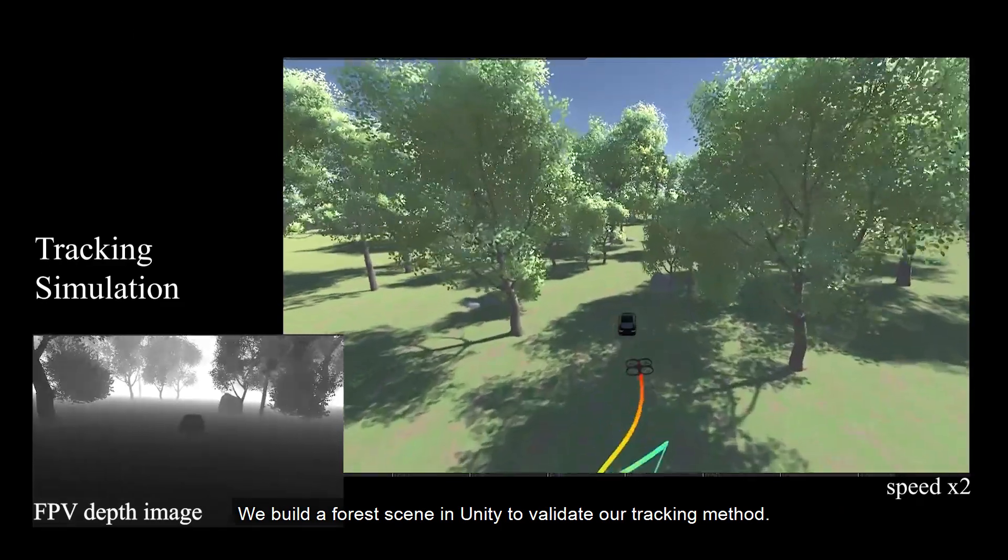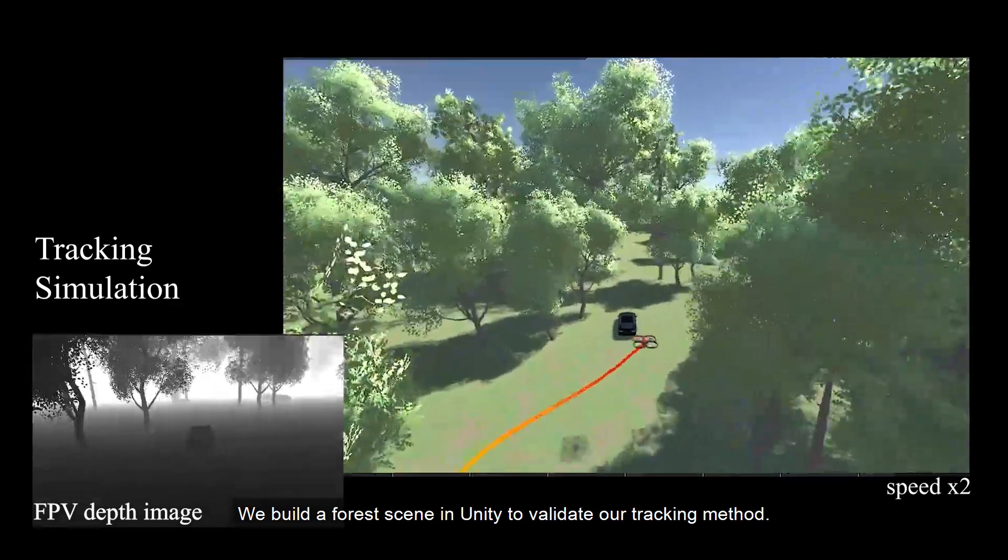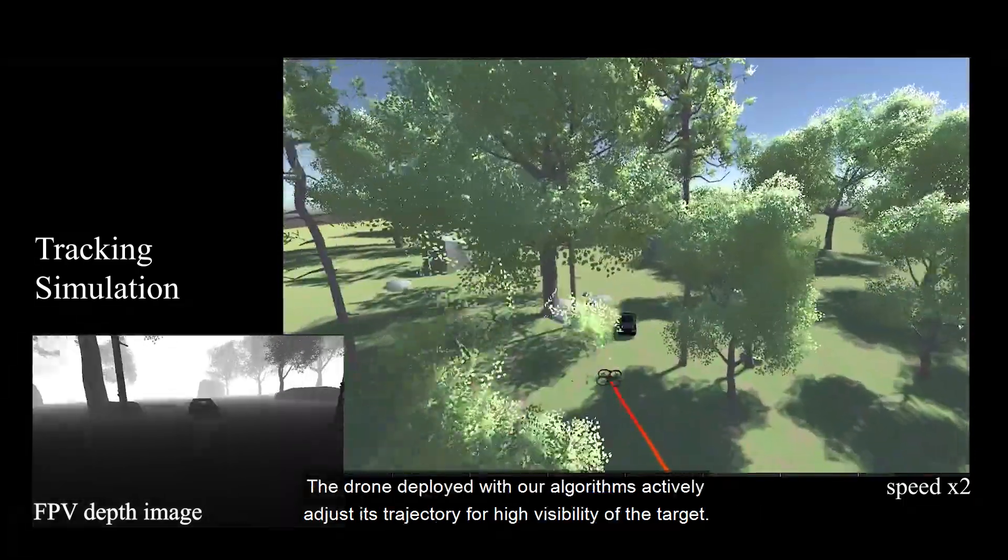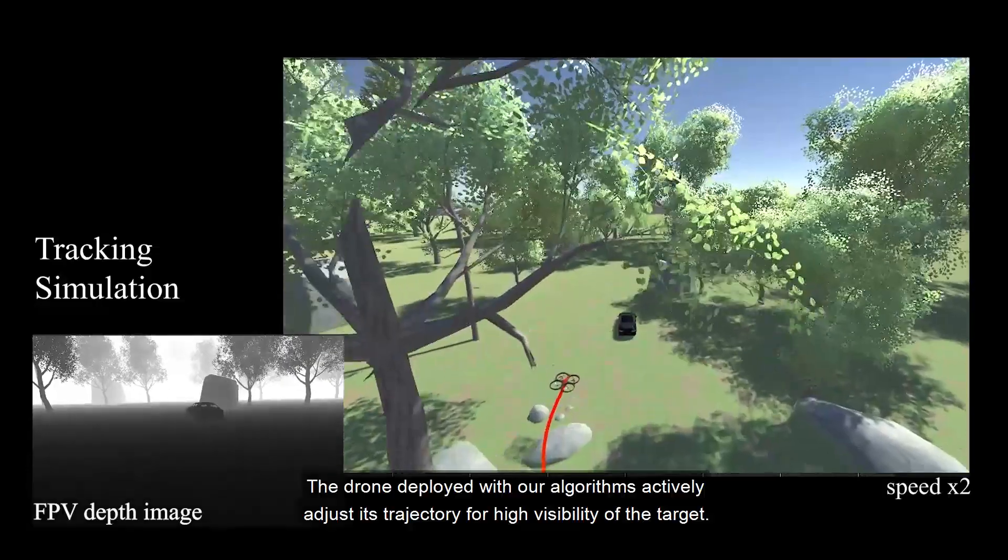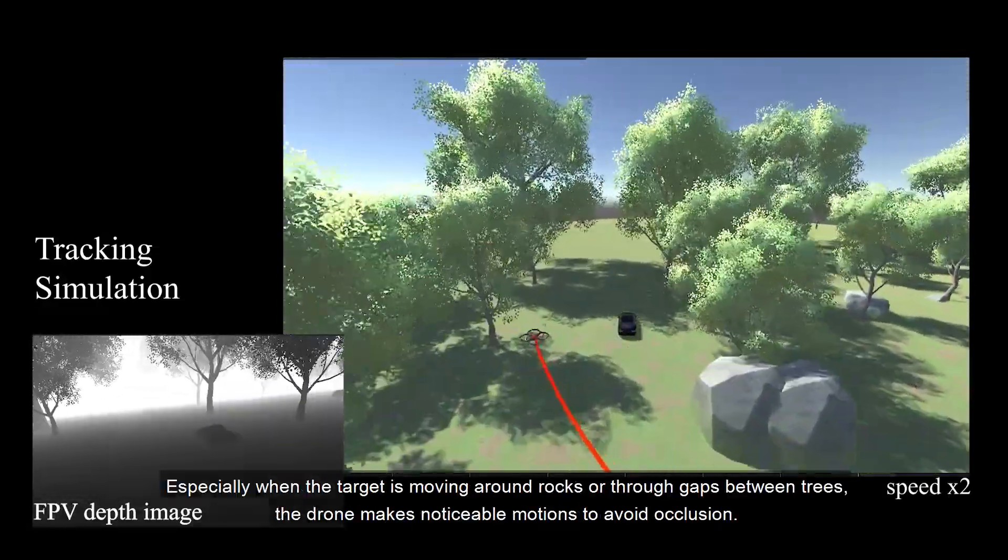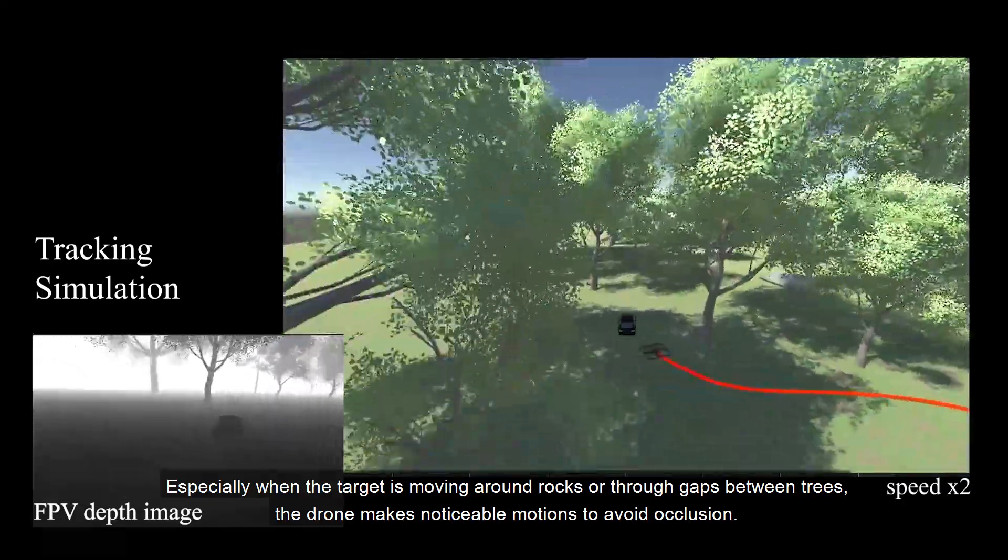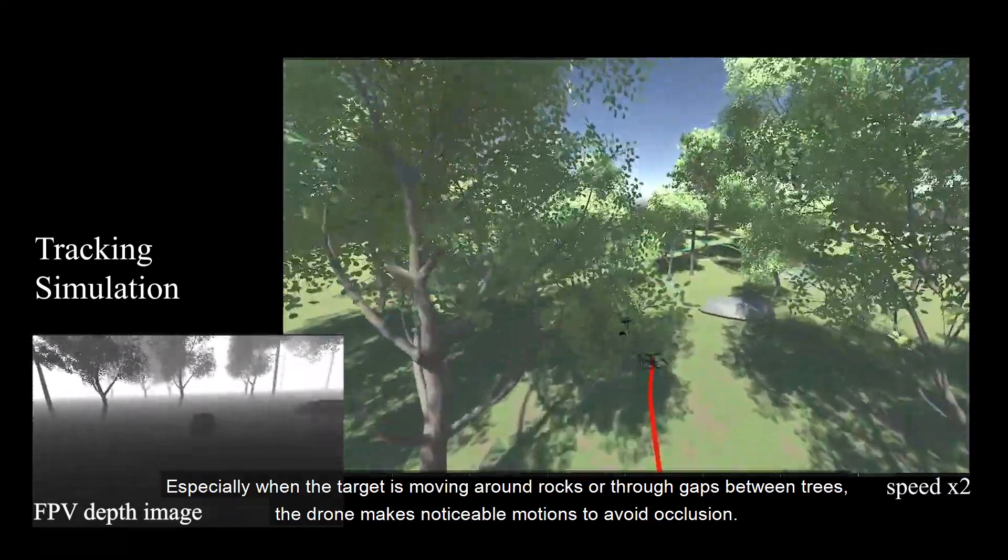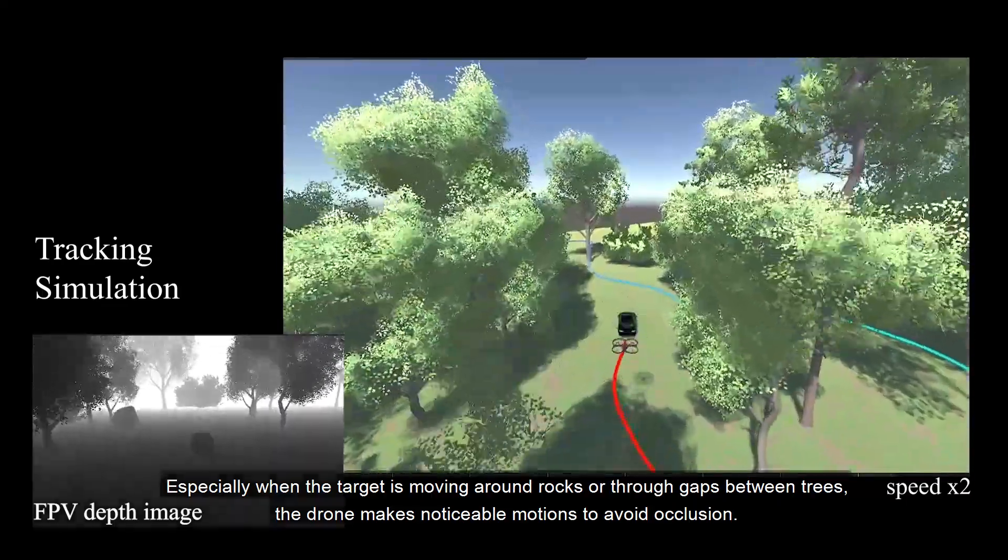We build a forest scene in Unity to validate our tracking method. The drone deployed with our algorithms actively adjusts its trajectory for high visibility of the target. Especially when the target is moving around rocks or through gaps between trees, the drone makes noticeable motions to avoid occlusion.